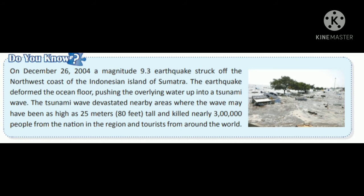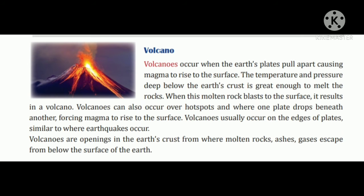Volcano. Volcanoes occur when the earth's plates pull apart, causing magma to rise to the surface. The temperature and pressure deep below the earth's crust is great enough to melt the rock. When this molten rock blasts to the surface, it results in a volcano.